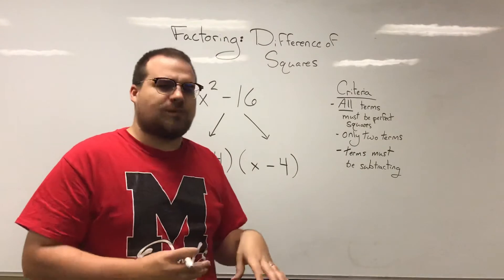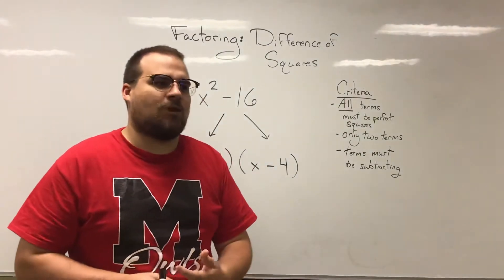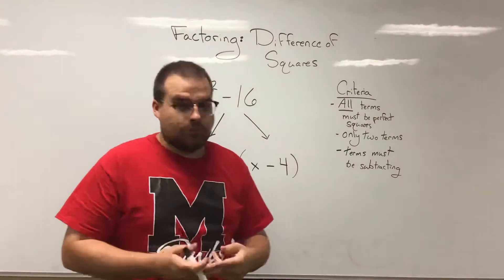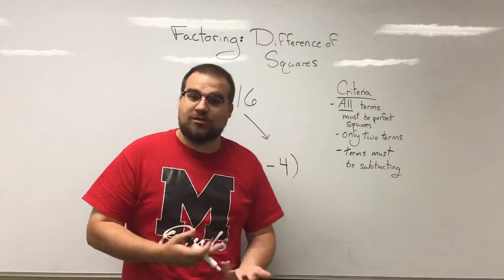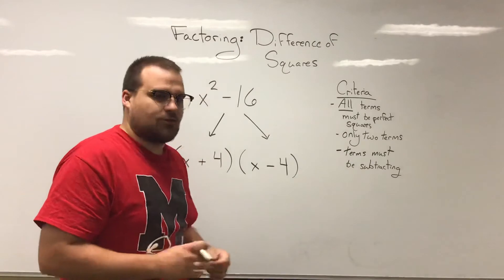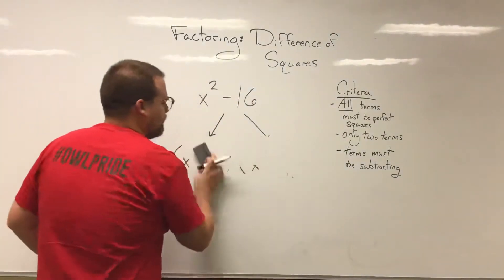So if you ever see something like this, x squared plus 16, it may be very easy to look at that and say, well, those are both perfect squares and there's only two terms, so I might be able to do this version of factoring. Although you can't. They must be subtracting terms. So I'm going to go ahead and erase this problem.